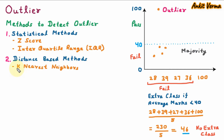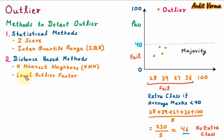The second category of methods to detect outlier is distance-based methods. The first is K-nearest neighbors, also called KNN — it identifies outliers which are far from its neighbors. Next is local outlier factor, also called LOF — it calculates the density and based on the density it finds the outlier which is having lower density.